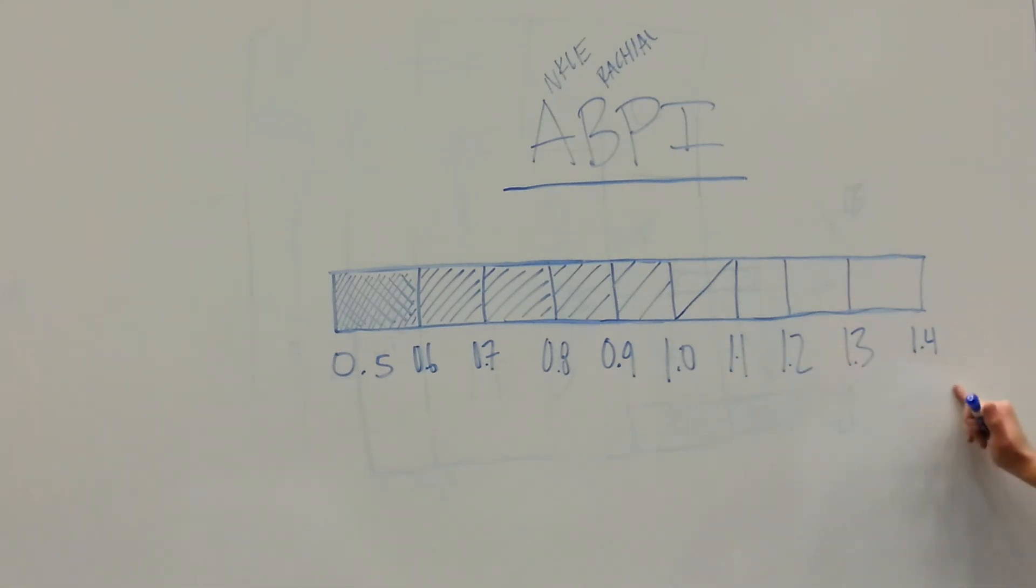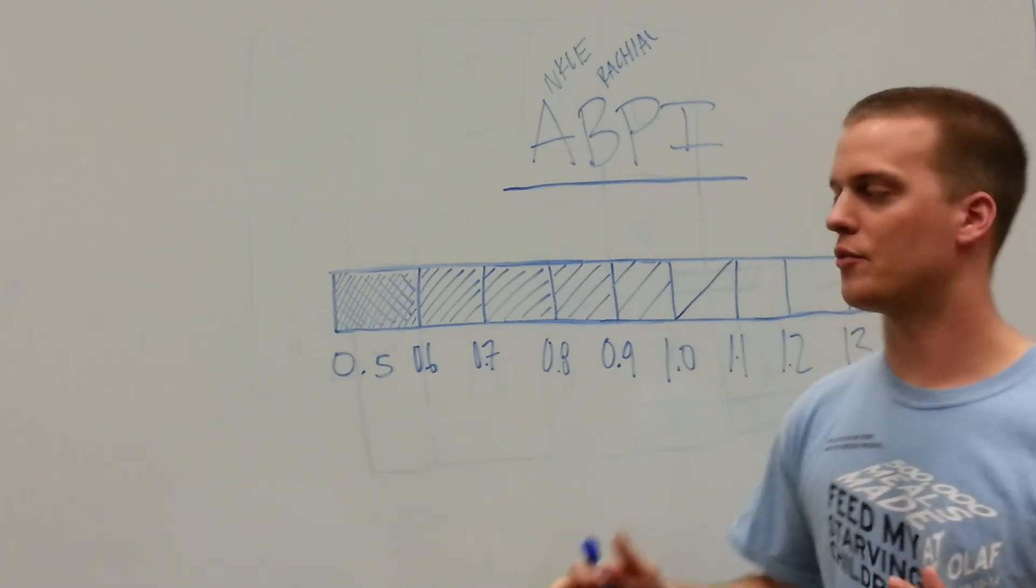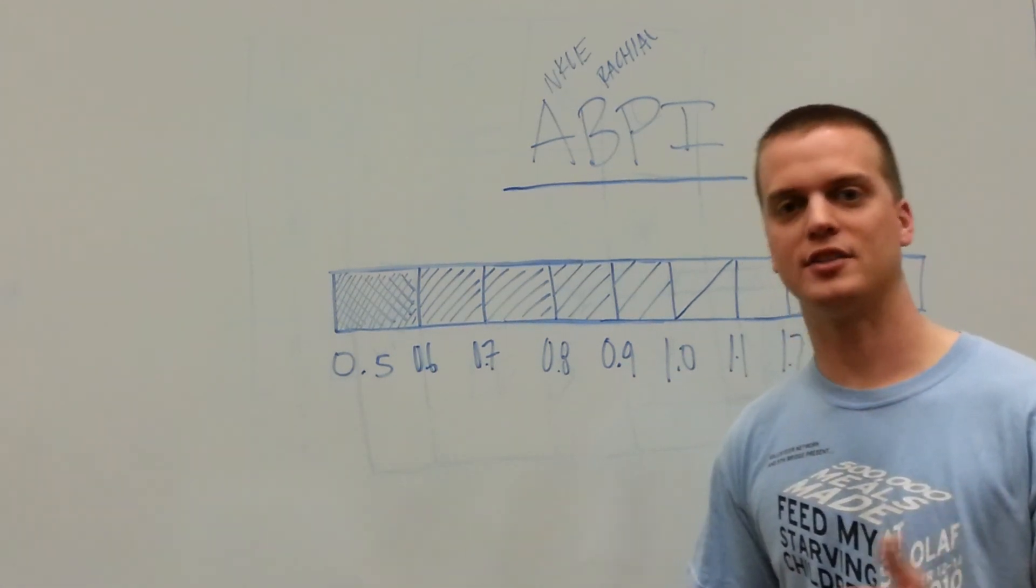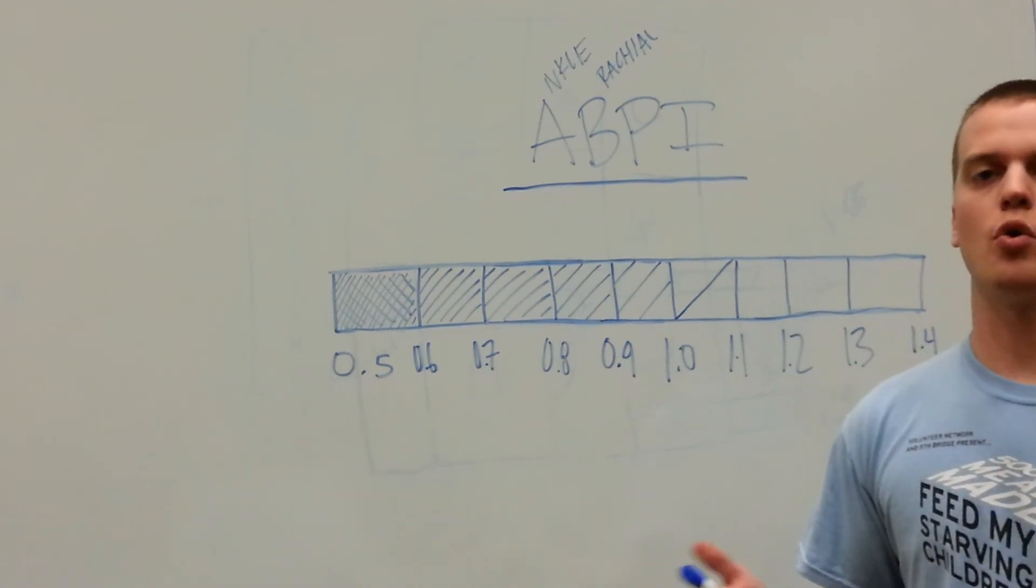What we're really trying to get is that 1.0 to 1.4 range. Those are the normal ranges, that's the healthy range, and that's where you're not at risk for things like a heart attack, a myocardial infarction, those kinds of coronary events.